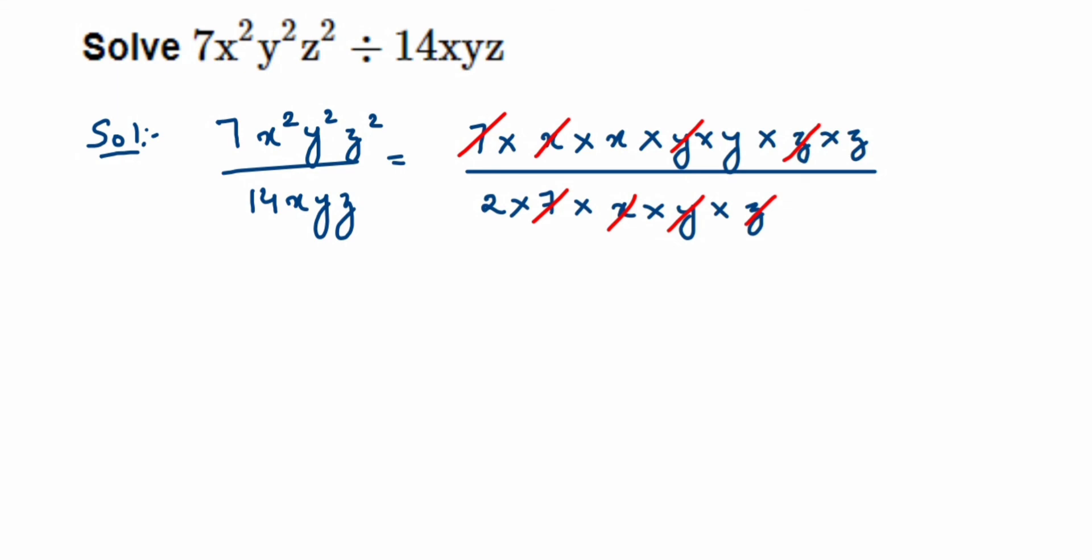So left over here is, this is equal to x into y into z, that is what is left in the numerator, so it's xyz. In the denominator only 2 is left, so it's upon 2. So answer is xyz over 2.